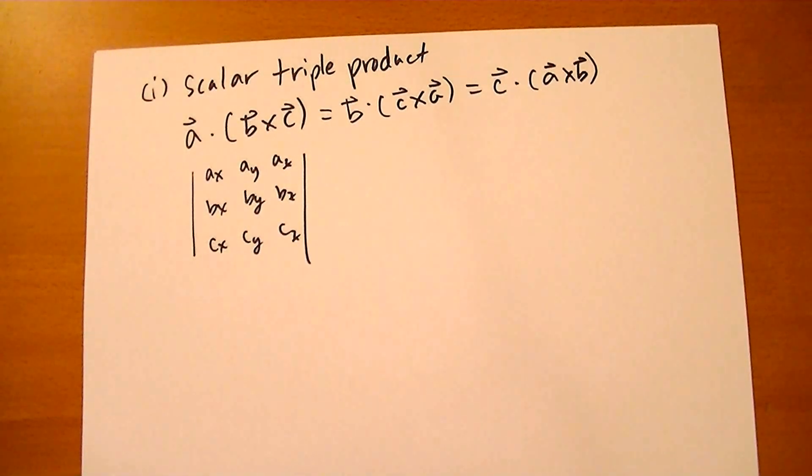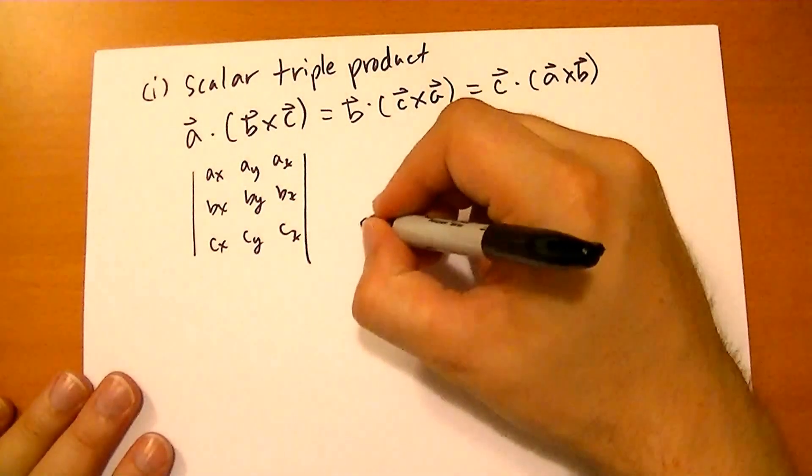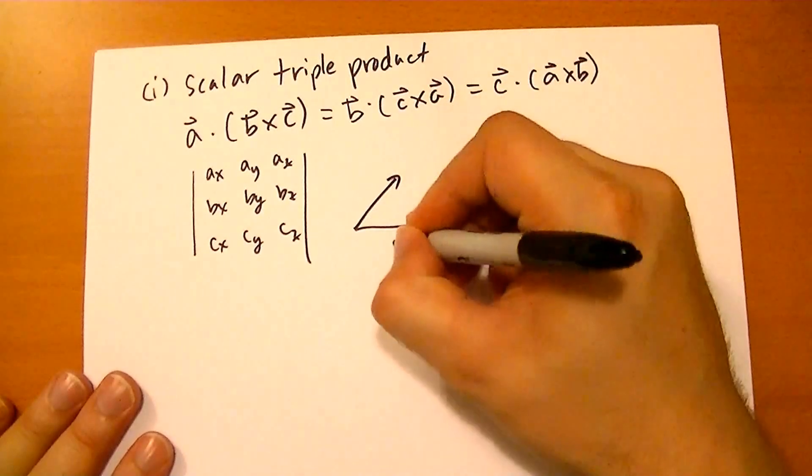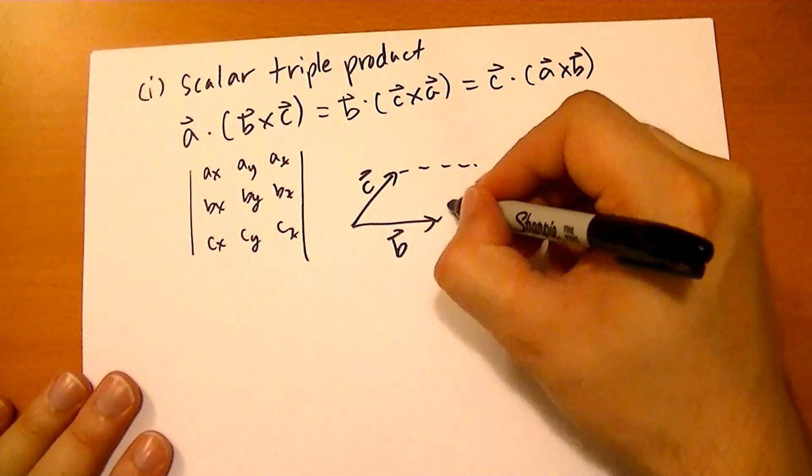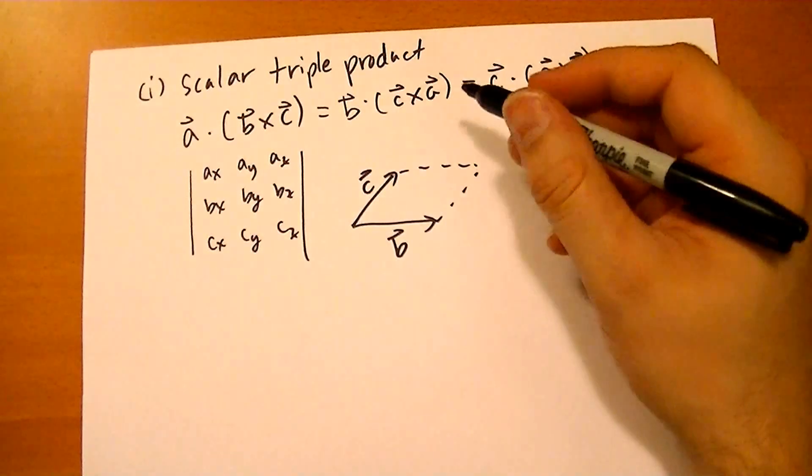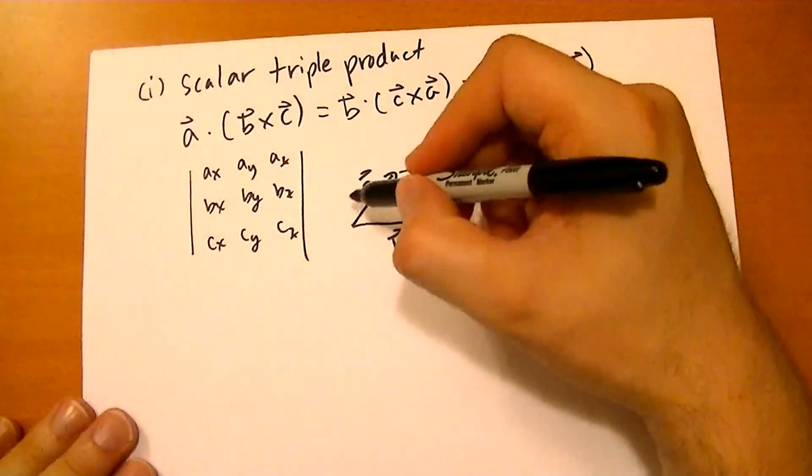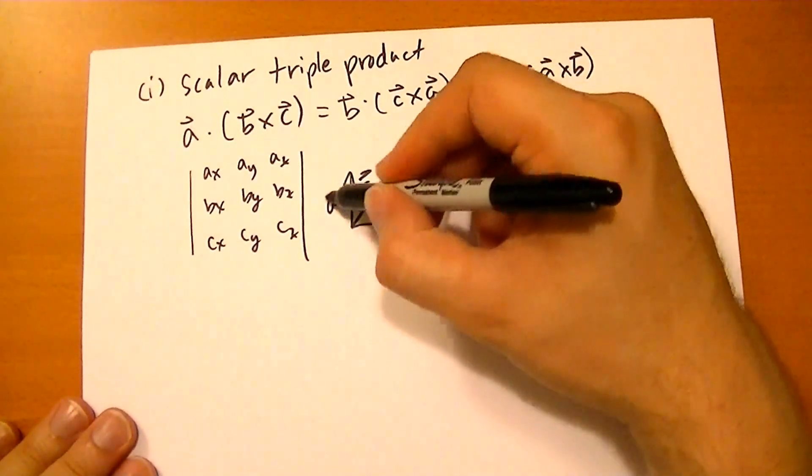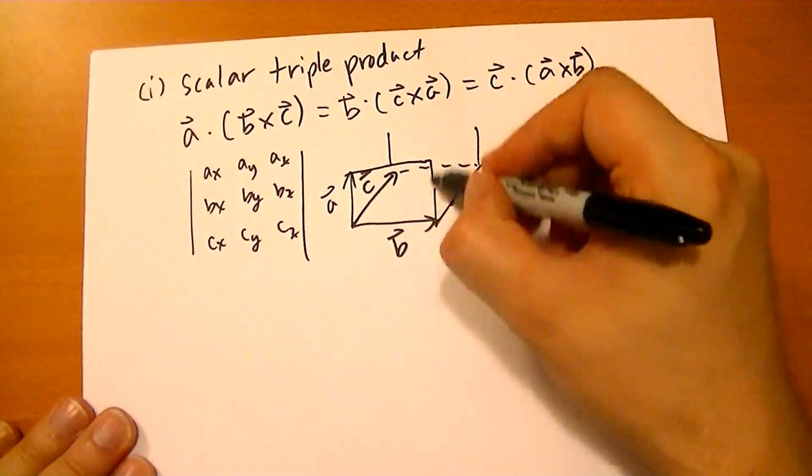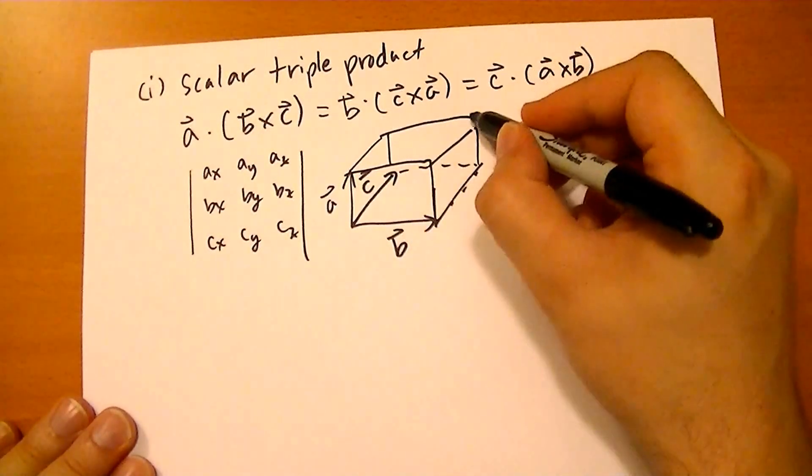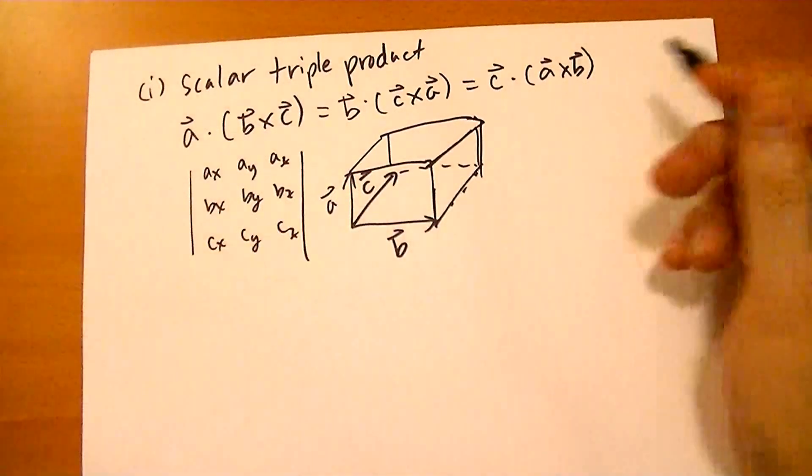It's great. The geometrical interpretation is: suppose you had three vectors. C vector cross B vector is actually the area of that parallelogram. And then if we had an A vector to boot, what we would get is the volume of the parallelepiped defined with a corner like that.